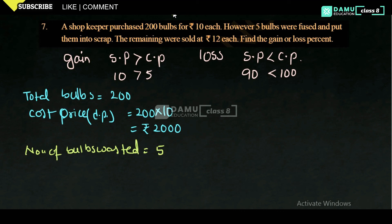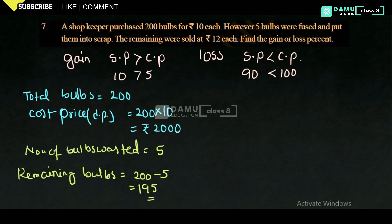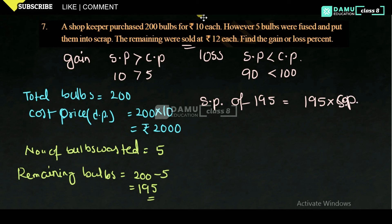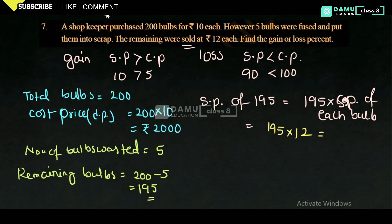So remaining bulbs = 200 minus 5 = 195. These 195 bulbs were sold. Selling price (SP) of 195 bulbs = 195 into 12 = 2,340 rupees. So SP = 2,340 rupees and CP = 2,000 rupees.